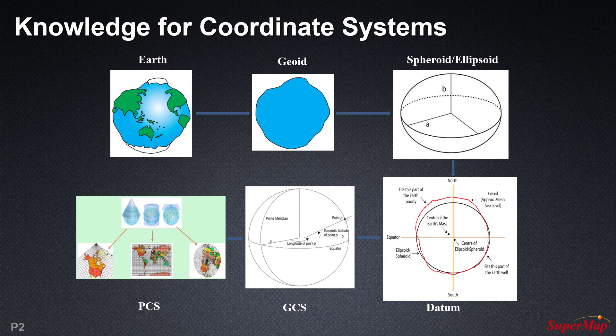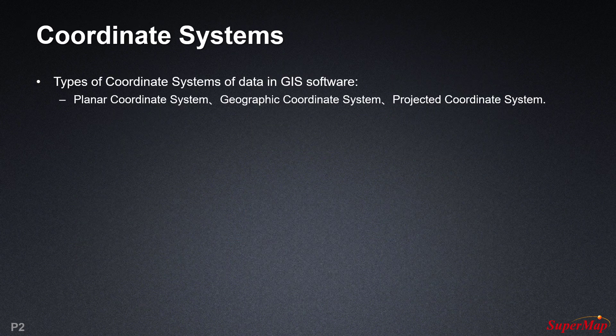In addition to the GCS, a PCS includes a map projection — a set of projection parameters that customize the map projection for a particular location — and a linear unit of measure. This was just a basic understanding of coordinate systems. We recommend more reading on each of these. Now let's start with the three kinds of coordinate systems in GIS software: the planar coordinate system, geographic coordinate system, and projected coordinate system.